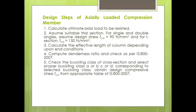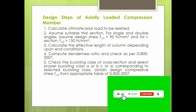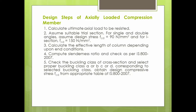The fourth step is a little bit lengthy. Check the buckling class of the cross-section and select the proper buckling class: A, B, C, or D. Corresponding to the selected buckling class, obtain the design compressive stress FCD from the appropriate table of IS 800 2007. For all classes, these buckling stress values have been given. The allowable compressive load is equal to FCD multiplied by the gross cross-sectional area.